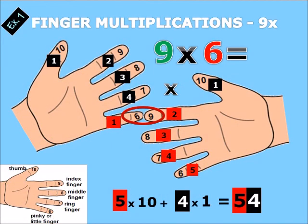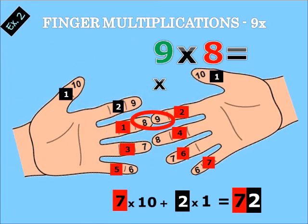For nine times six, put nine and six together. Count down from the two that are meeting: one, two, three, four, five — you have five, so five times ten is fifty. Then one times four, or four times one, is four — so fifty-four.